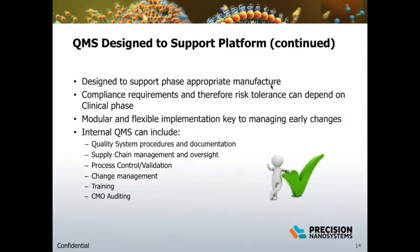Your internal QMS should be designed to support phase-appropriate manufacture. The level of compliance and oversight required for early phase one activities is going to be quite different and less complex than for phase three and commercial products. Compliance requirements and risk tolerance can depend on the actual clinical phase. Modular and flexible implementation is going to be key to managing early changes. The QMS can include quality system procedures, supply chain management oversight, process development or early validation activities, internal training activities, and auditing of external suppliers and CMOs. Use of consultants may be acceptable early in a company's life cycle, but having in-house resources with first-hand history of decision-making and outcomes is often preferable.